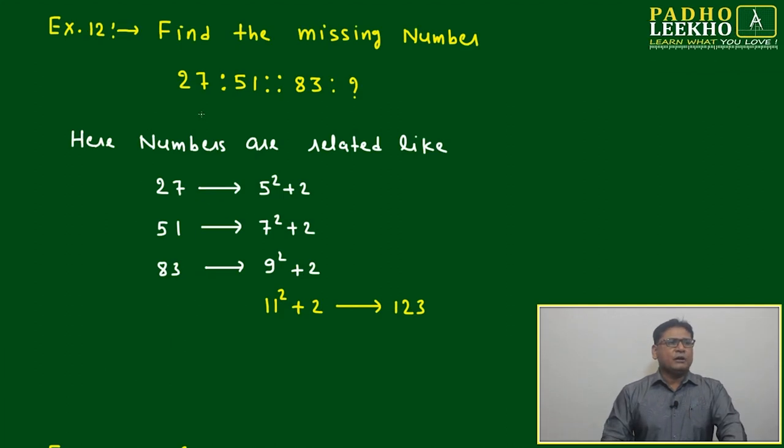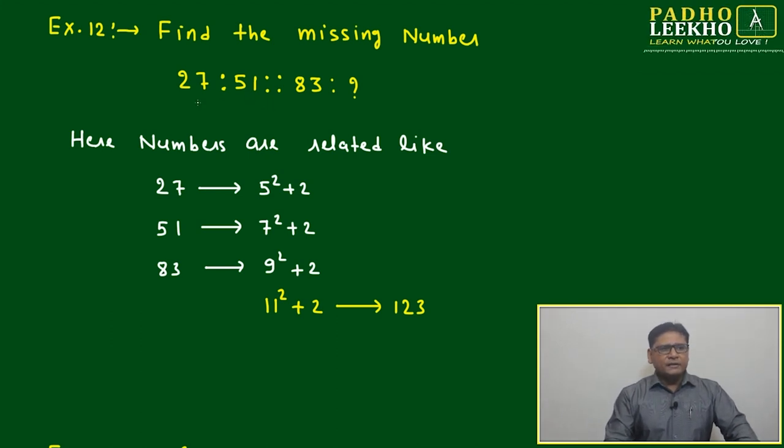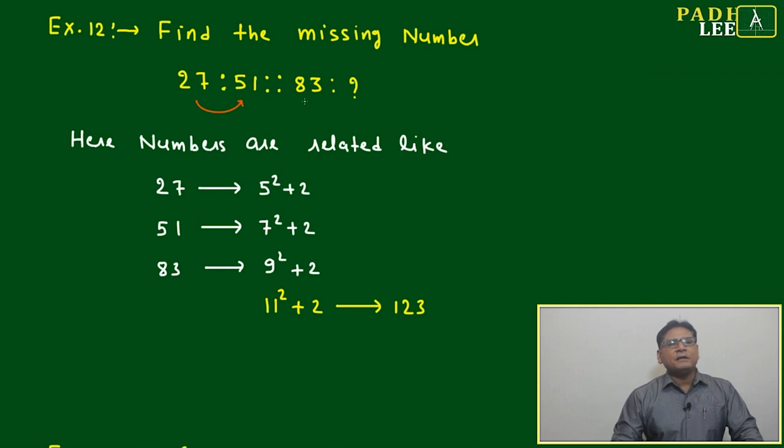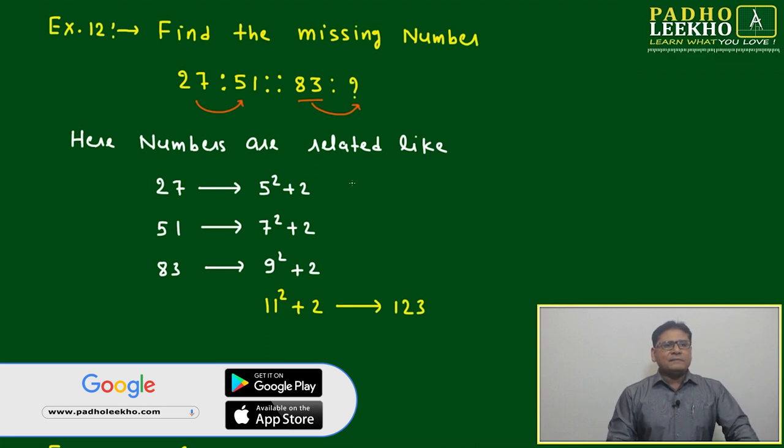Example 12: Find the missing number. 27, 51... how are 27 and 51 interrelated to each other? In a similar way, we have to find the number which is interrelated with 83. Here numbers are related like 27 is 5 square plus 2.